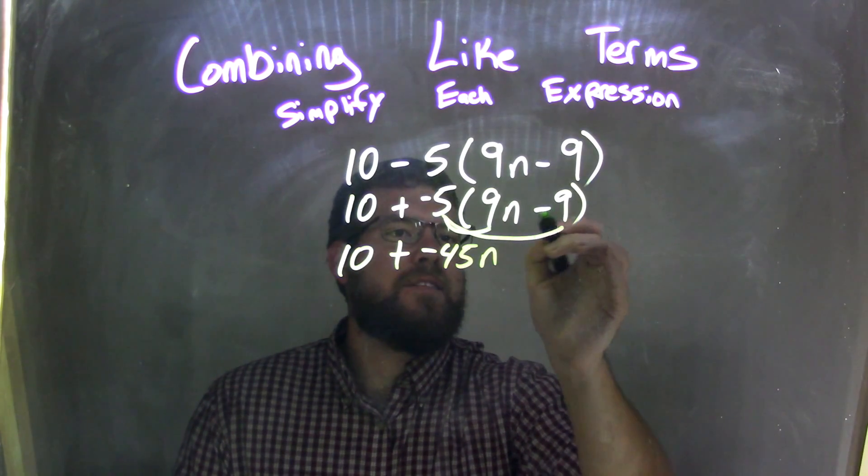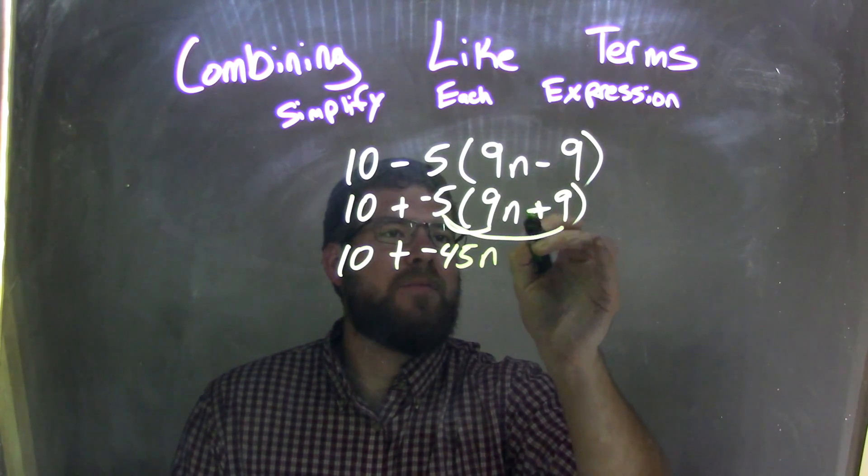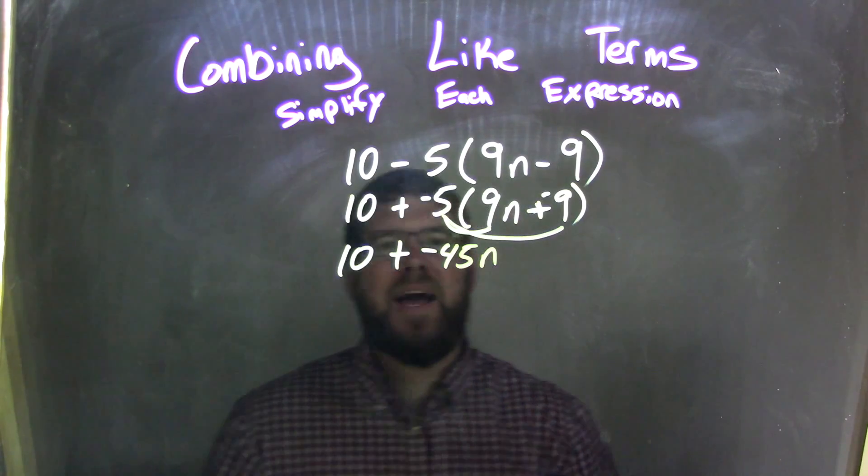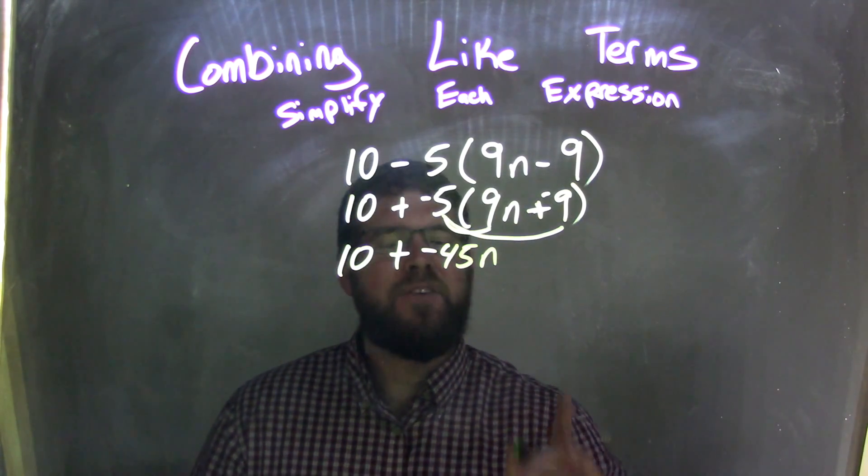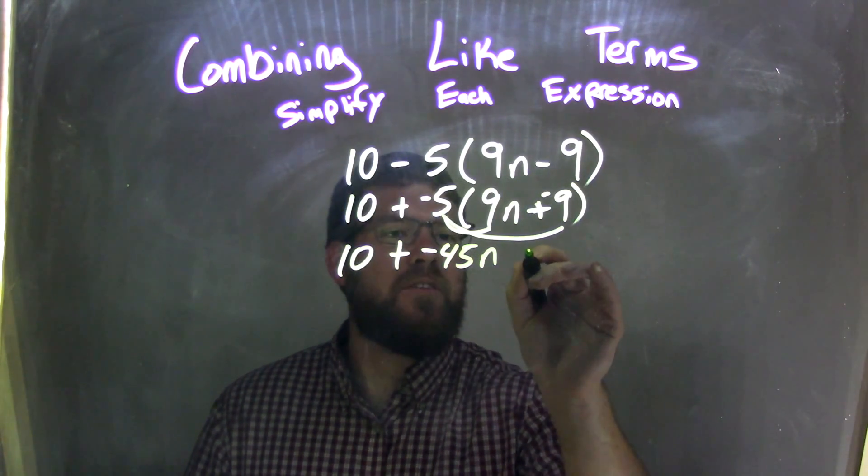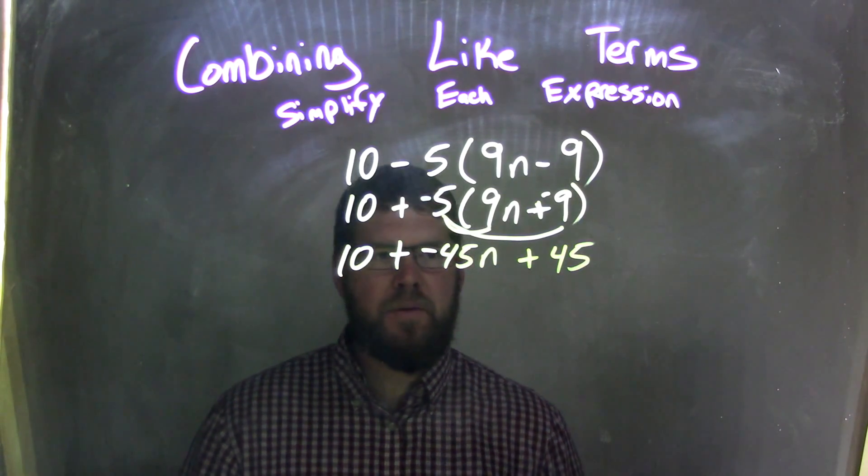And negative 5, see that minus? I think plus a negative, okay? Plus a negative. So negative 5 times a negative 9, two negatives together multiplied to be a positive, so we have positive 45 here, okay?